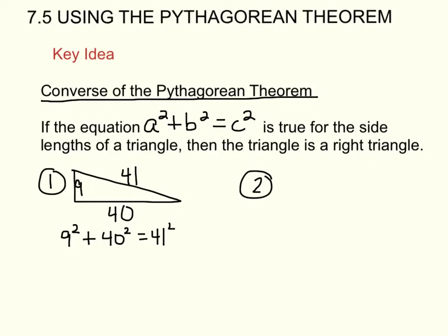So that would give us 81 plus 40 times 40 is 1600. 41 times 41 is 1681. I add 81 plus 1600. That gives me 1681 equals 1681. That is true. So yes, this is a right triangle.